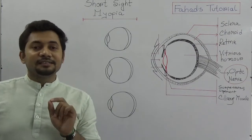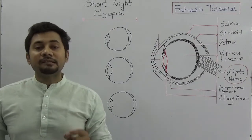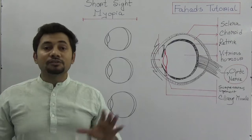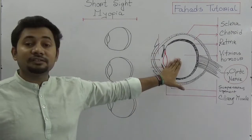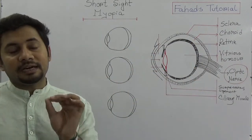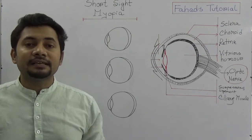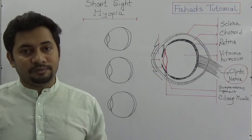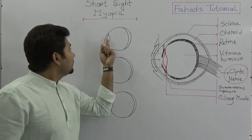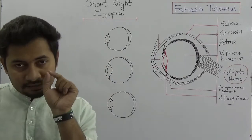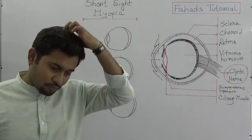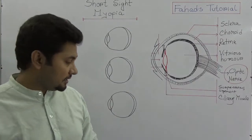Salam alaikum rahmatullah. In this video, one of the vision defects of the human eye will be discussed — short sight, or myopia. Those who already watched my tutorial on the structure of the human eye will find understanding myopia much easier, as you already know about refraction and the role of the lens inside the human eye.